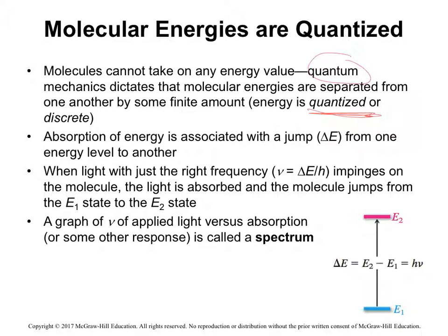When light is just the right frequency — which depends on the molecule — the light is absorbed and the electron can jump up. Whenever it relaxes and comes back down, it gives off that same frequency. If you plotted a graph of that, you would see the spectrum. So when you shine light at exactly the right frequency, you cause the electron to go up, and when it comes down it gives off that same amount of energy.